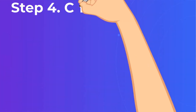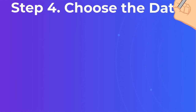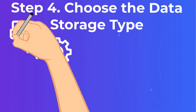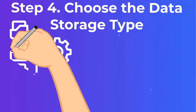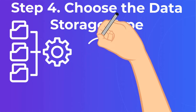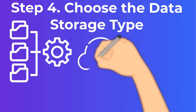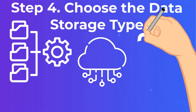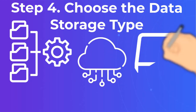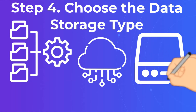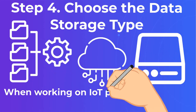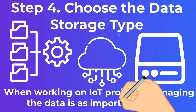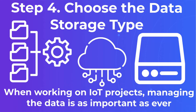Step 4: Choose the Data Storage Type. When working on IoT projects, managing the data is as important as ever. As a smart home app developer, you have two options. You can either resort to cloud storage — users can access all of the data as long as they are connected to the internet — or a local one, which is not ideal, since it's incredibly power-hungry and there is no way to restore the data in case of software failure.